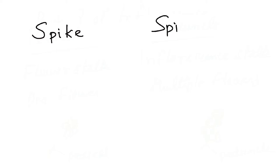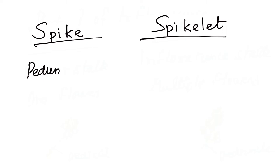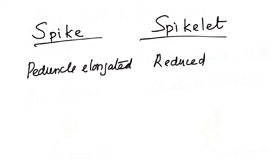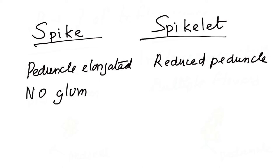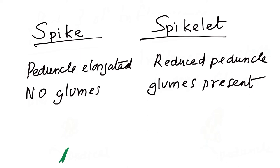A very important difference usually asked in biology examinations is the difference between the spike and the spikelet. A spike has an elongated peduncle, whereas a spikelet can be called a reduced spike — it has a reduced peduncle. A very key differentiator between these two types of inflorescence is that in a spike, glumes are absent, whereas in the case of a spikelet, bract-like structures called glumes are present.